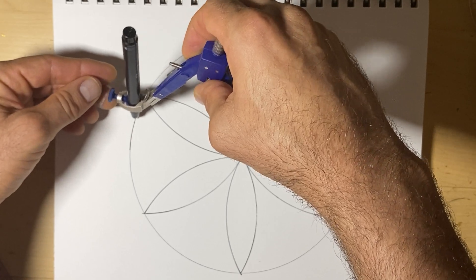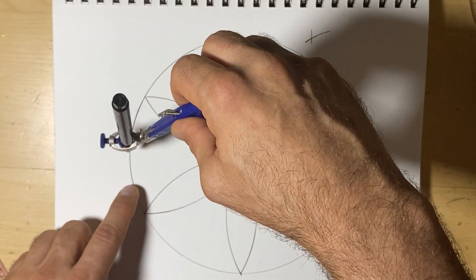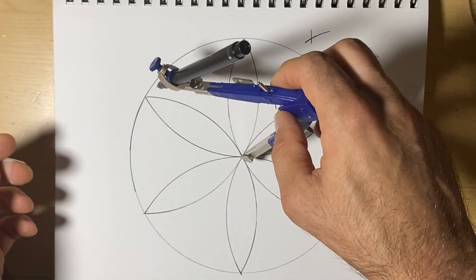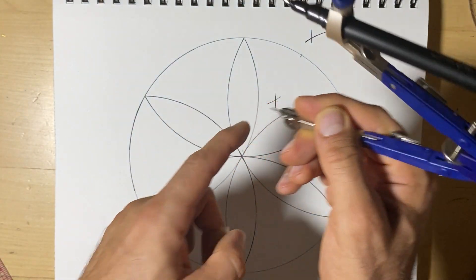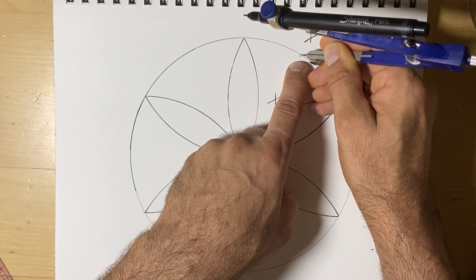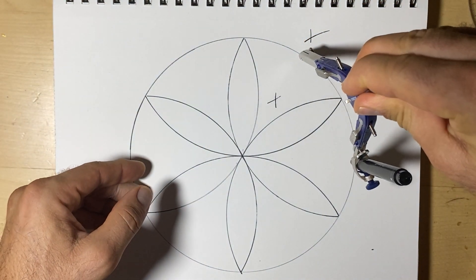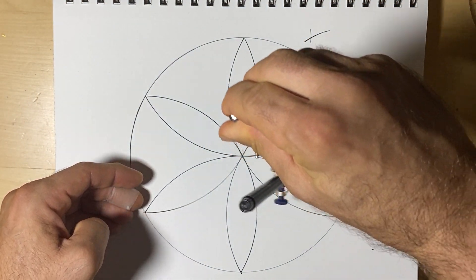And again, if you're using a pencil, you can kind of see if it's exactly where it should be. If not, we can erase it. And now we're going to put the point of the tip on that spot that we found. And we're going to repeat what we did. We're going to go from edge to edge.